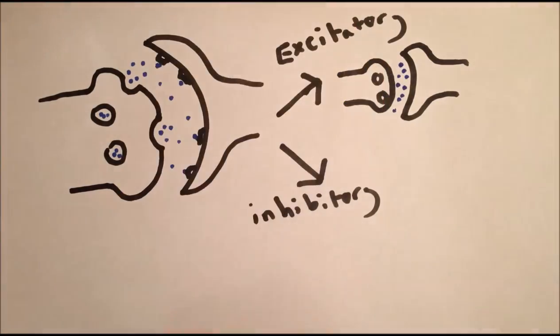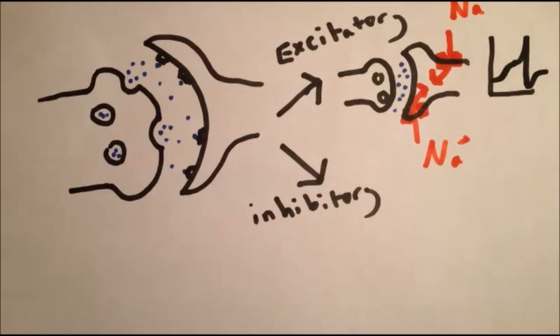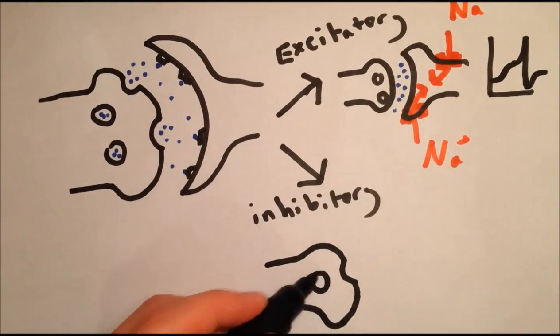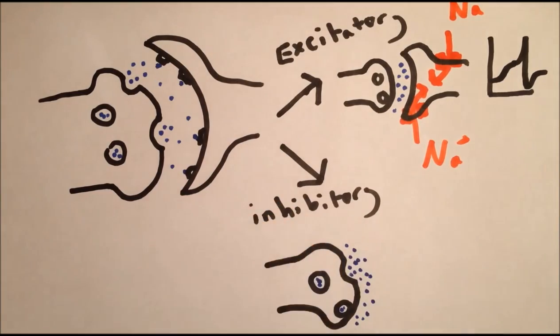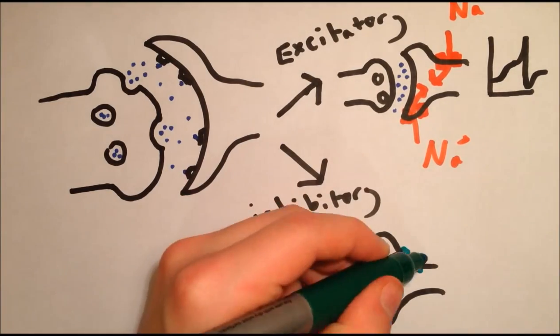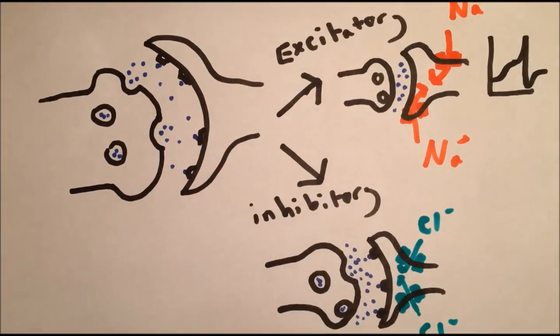This may excite the next neuron, causing positive ions to flow in and moving the membrane voltage closer to the threshold voltage, possibly triggering an action potential. Or it may inhibit the next neuron, causing the influx of negative ions such as chloride, moving the membrane voltage further away from its threshold voltage.